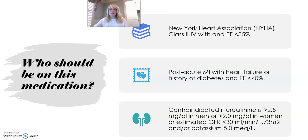Class 1 is no physical limitation in activity. Class 2 is slight limitation with ordinary physical activity. Class 3 is marked limitation in activity but comfortable at rest. And Class 4 is signs and symptoms at rest. The first indication is New York Heart Association Class 2 through 4 with an ejection fraction of 35% or less.